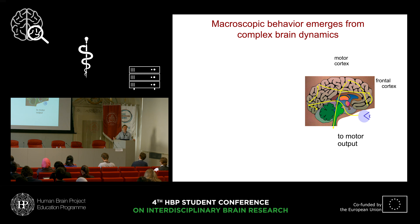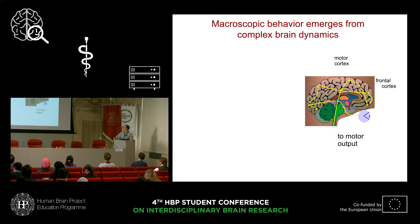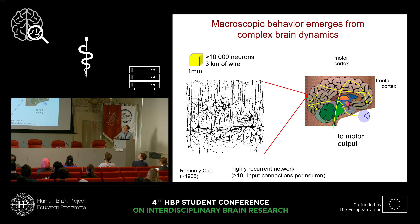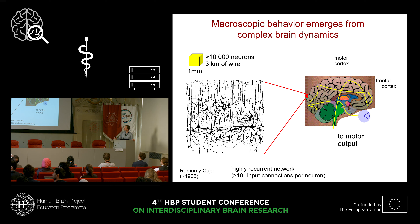Here you see a cartoon of the brain that shows how information may flow through different areas, but of course this is a highly oversimplified model that will not help us understand how information is processed in the brain. To understand how the brain really works, we need to zoom in and look at a little piece of cortex, and what we see is this incredibly complex network of nerve cells, where in each cubic millimeter we have ten to hundred thousand neurons.